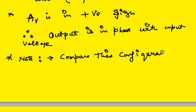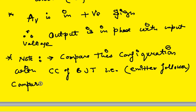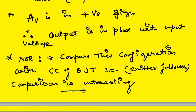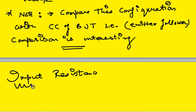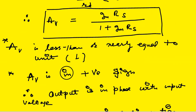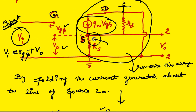This configuration can be compared to the Common Collector configuration for a BJT, which is the Emitter Follower circuit. Comparing the two yields some interesting facts. Now, looking at the input resistance of the Source Follower circuit from the diagram, the input resistance is RG (the gate biasing resistors R1 and R2).